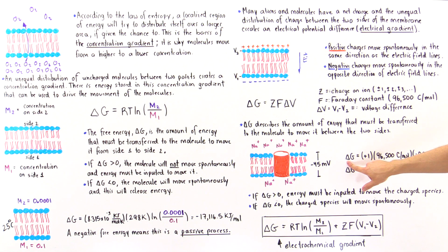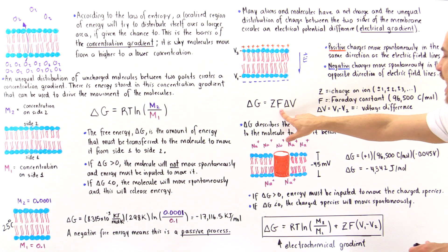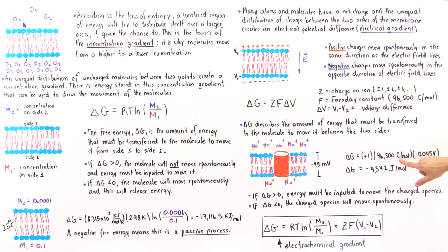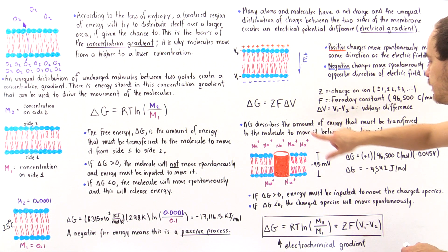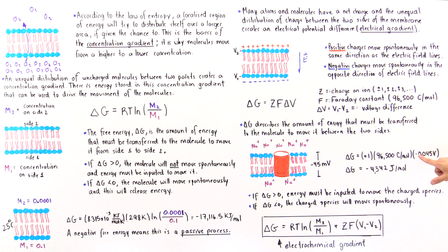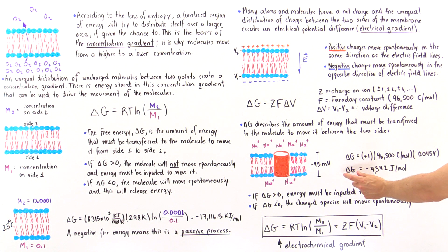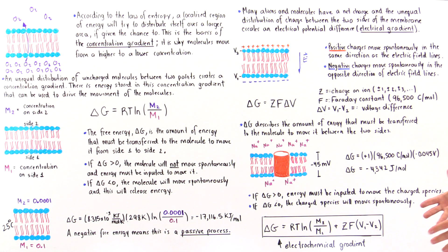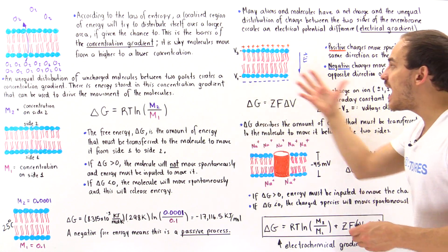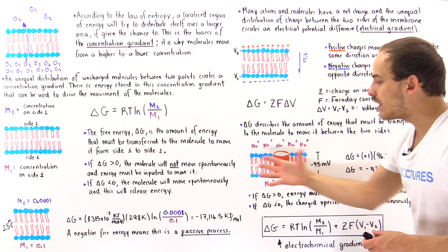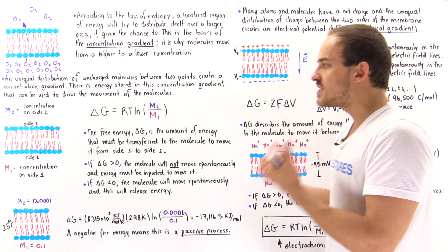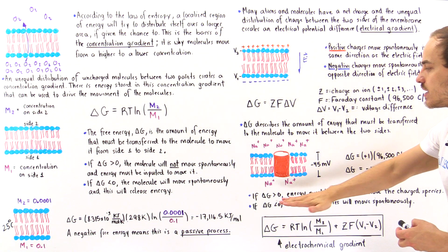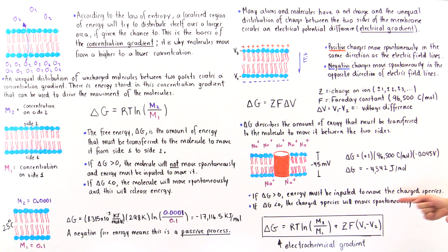If we calculate delta G, we see that the Z value is positive 1, F is 96,500 coulombs per mole, and delta V — converting from millivolts to volts — is negative 0.045. Multiplying these out, delta G is equal to negative 4,342 joules per mole. So once we open up the channel, because of the electrical gradient, there will be a spontaneous movement from the outside to the inside of the cell, and that's exactly what the negative delta G tells us.